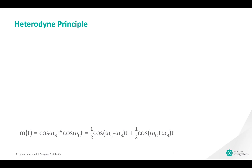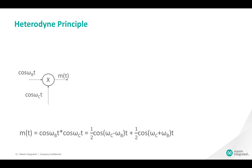The heterodyne principle follows this formula. The product m(t) of two cosinusoidal signals equals one-half the sum of the two cosinusoids, at a frequency equal to the sum and difference of the two original signal frequencies. Where cosine(ωb·t) represents the baseband signal, cosine(ωc·t) represents the carrier signal, and m(t) is the multiplied or mixed signal. The symbol in the circle represents the multiplier, also known as the mixer.